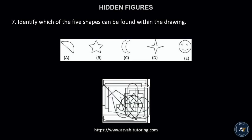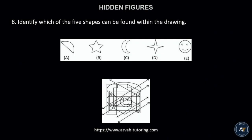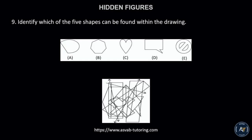Number 7. Identify which of the five shapes can be found within the drawing. The correct answer is letter B. Number 8. Identify which of the five shapes can be found within the drawing. The correct answer is letter D. Number 9. Identify which of the five shapes can be found within the drawing. The correct answer is letter A.